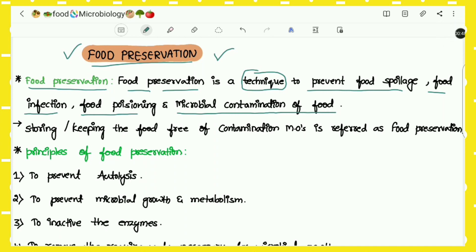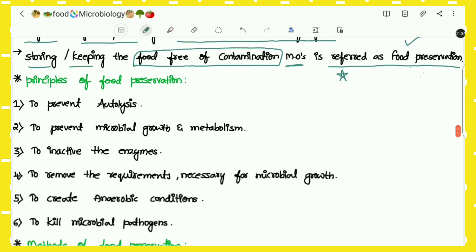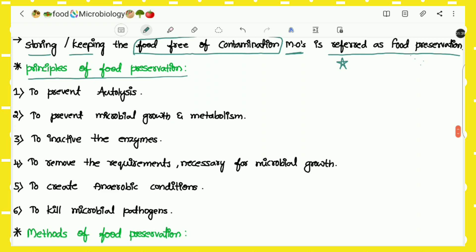So the definition is: food preservation is a technique that we use to prevent food spoilage and microbial contamination, food poisoning, and any infection to the food. Storing or keeping the food free from the contamination by microorganisms or any other contamination process is referred to as food preservation.